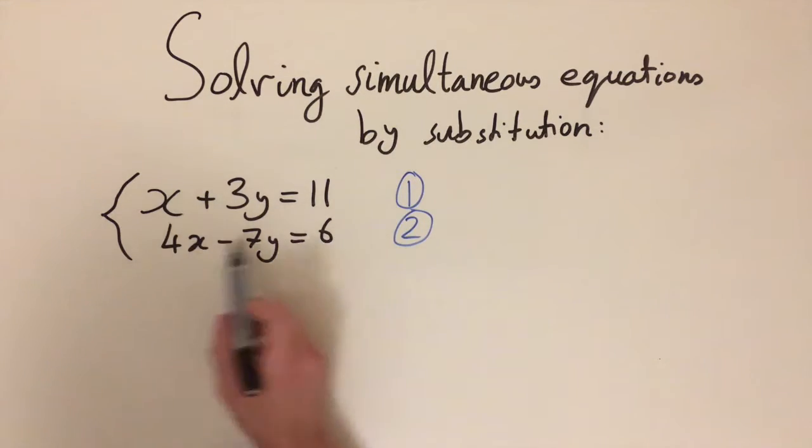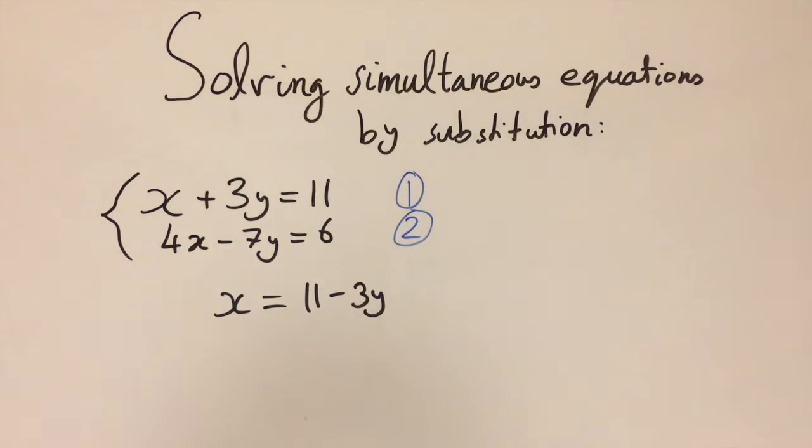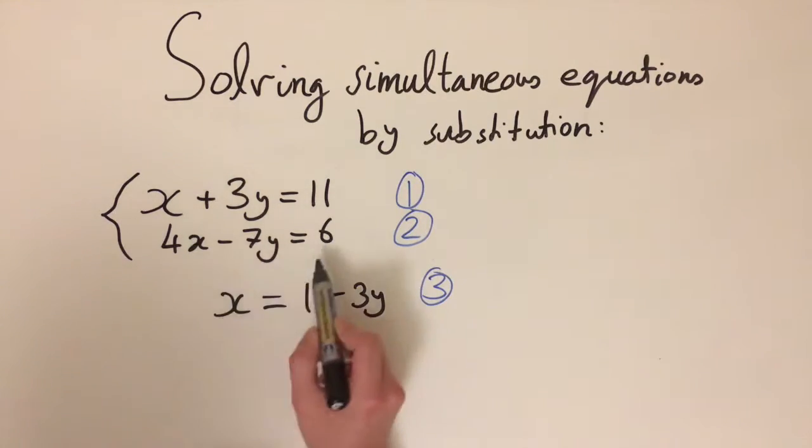Our first step is rearranging this equation to find x. If we do this we get x equals 11 minus 3y. Let me label that equation number 3. Now we've got x rearranged on its own in terms of y, and the next step is to substitute it straight into the second equation.